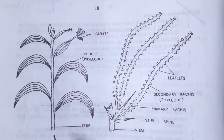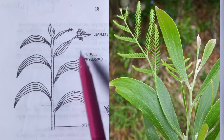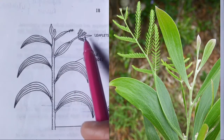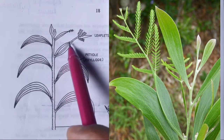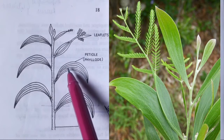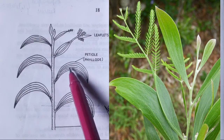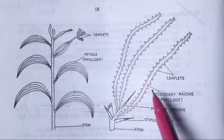In the case of the phyllode of Australian Acacia, the leaflets will soon fall off, due to which the petiole gets modified into a flat and expanded leaf-like structure. This is actually the petiole which is looking like a leaf — it is green in color and it will perform photosynthesis. That is your phyllode.